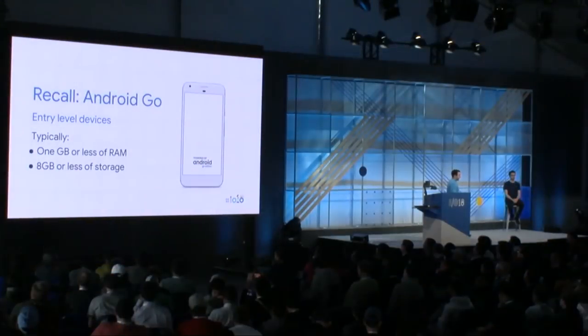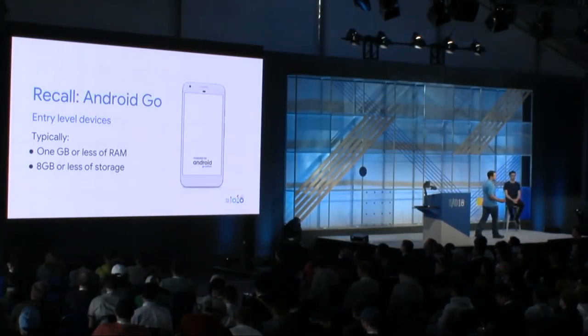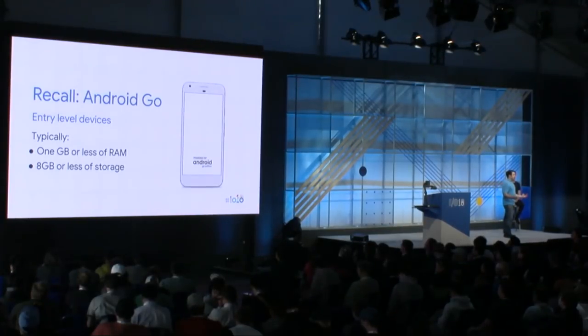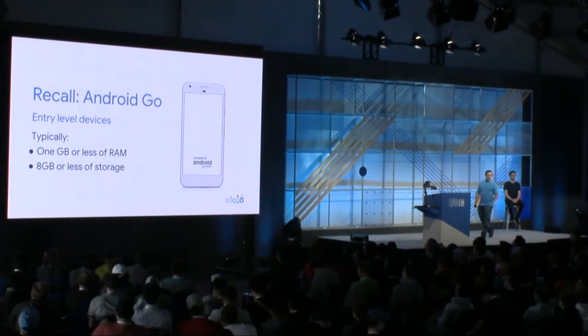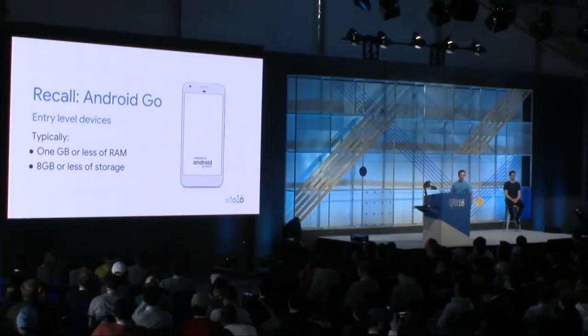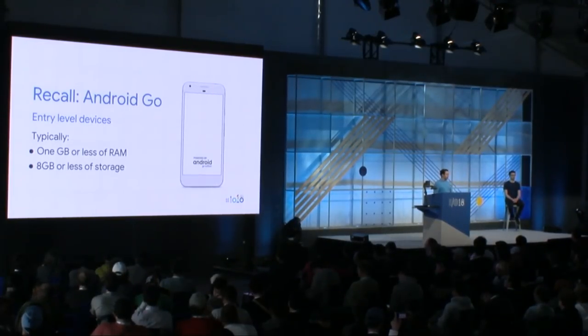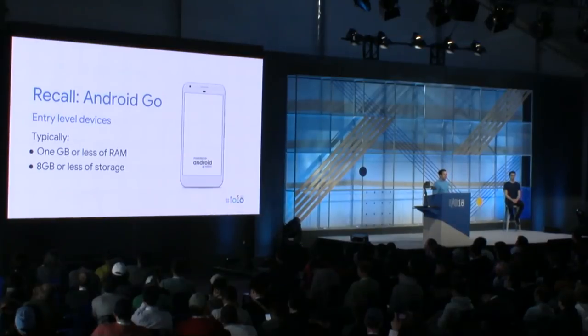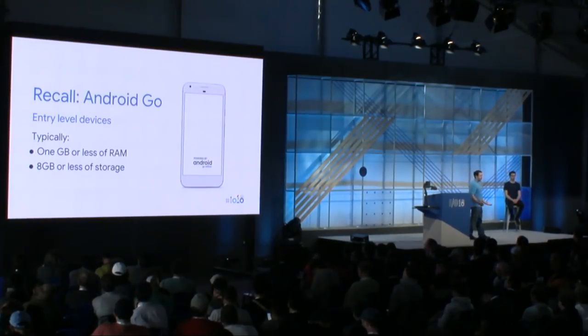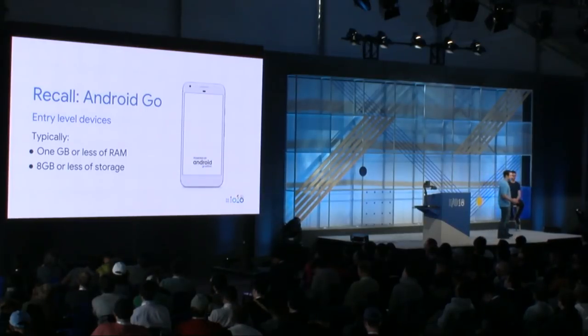Why are RAM and storage optimizations important? Recall last year, we introduced a new initiative called Android Go, aiming at running the latest versions of Android on entry-level devices. Since these devices typically have one gigabyte or less of RAM and eight gigabytes or less of storage, it's important to focus on optimizing these areas so that users can run and install as many applications as possible. This isn't just for Android Go — premium devices also benefit from these optimizations, but since they have more resources, normally it's to a lesser degree.